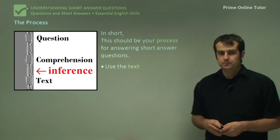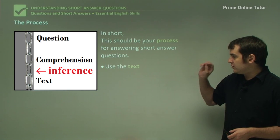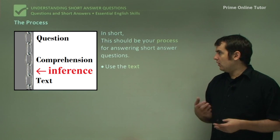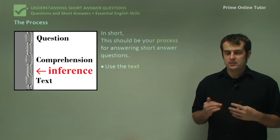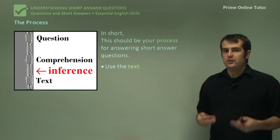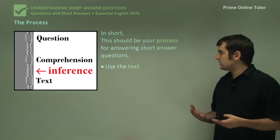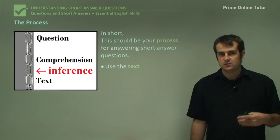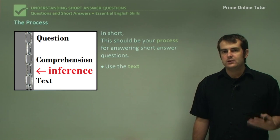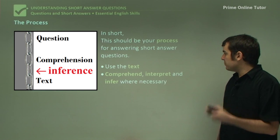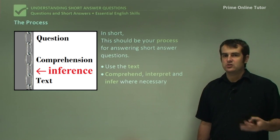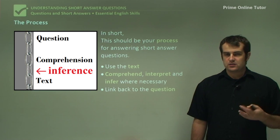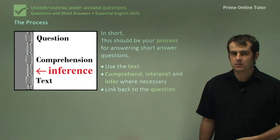If we look at the chain — question, comprehension, text, and inference — we've got the process for answering short answers, and this is the process you should be using for all of them. Once you've got the stimulus and looked at it, first you use the text. The stimulus is still important — you need to refer to it as a measure of what the text has done. You need to comprehend, interpret, and infer where necessary, as the question will dictate, and then you need to link it back. Make sure that link is quite strong when developing your answer.